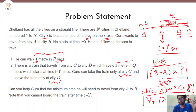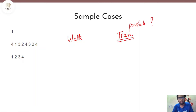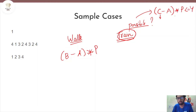If he decides to walk directly from city a to city b, the time is (b minus a) × p. So the approach is: compute the walking time, check if the train is usable (i.e., c minus a × p ≤ y), compute the train time if possible, and take the minimum of the two. Walking is always possible; taking the train requires that feasibility condition to hold.